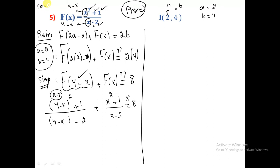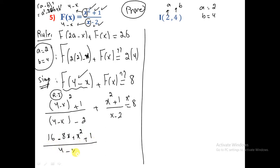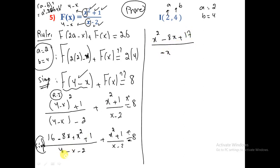So f(4-x) = (x² - 8x + 16 + 1)/(4-x-2) = (x² - 8x + 17)/(-x+2). Adding f(x): (x² - 8x + 17)/(-x+2) + (x²+1)/(x-2) = 8. The denominators differ in sign. Simplifying the first denominator: 4-x-2 = -x+2, giving (x² - 8x + 17)/(-x+2) + (x²+1)/(x-2) = 8.